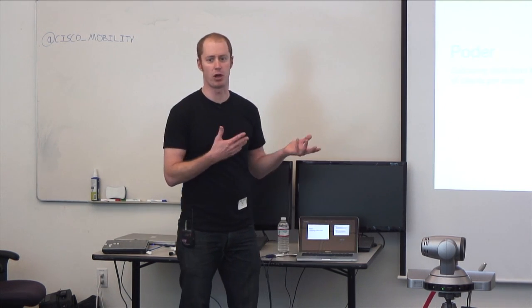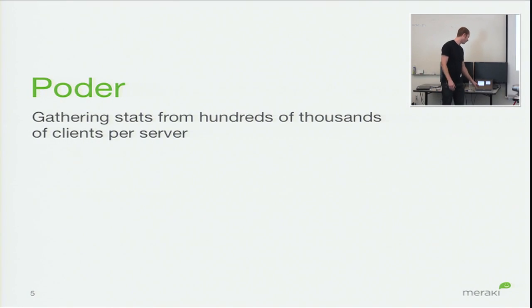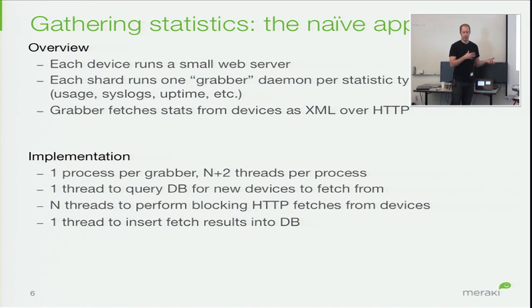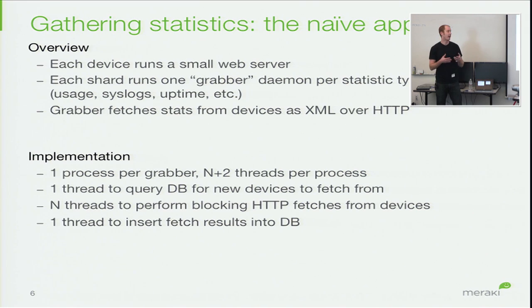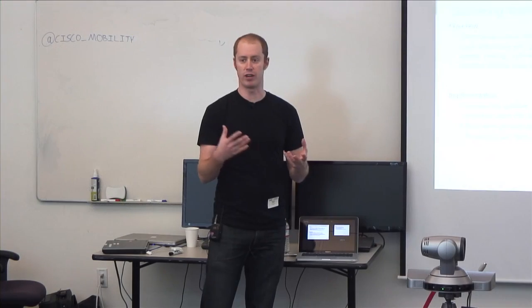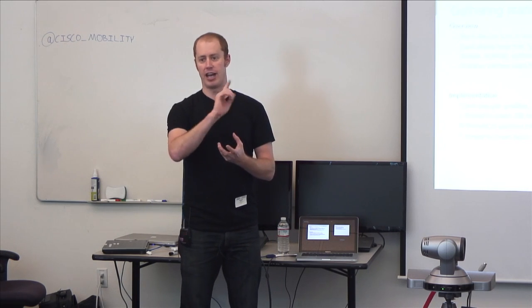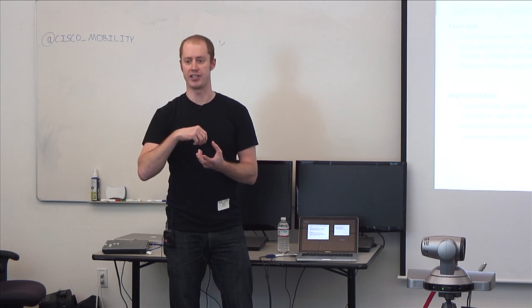The first system I want to talk about in detail is called Poder. Poder is what allows us to gather all these statistics as quickly as we do. It was first developed in spring 2009 and completely rewritten in spring 2011 — it's about a fourth-generation system. The very first approach was that every device ran a small web server with various URLs you could poll — show me usage information, which clients are connected, what the uplink bandwidth is. Every shard ran grabber daemons, small C++ processes that made TCP connections over the tunnel to each device and downloaded statistics over HTTP encoded as XML.